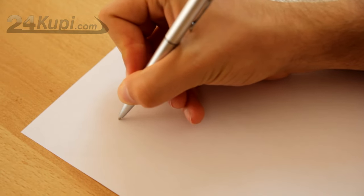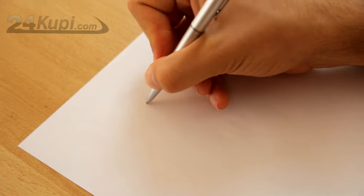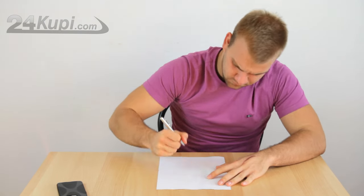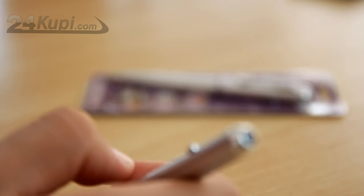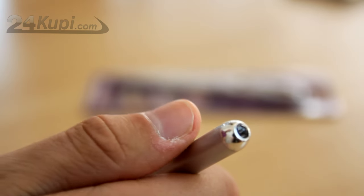Once you try to write on the paper, you will not see anything, so don't try to push on it like a crazy person. The pen on top has a UV light. By pressing the button on the side, you can turn it on and reveal the content that you have written.